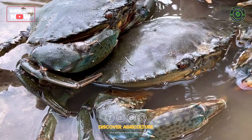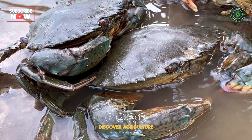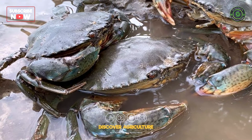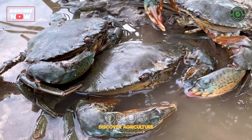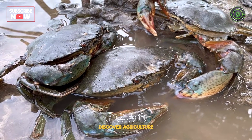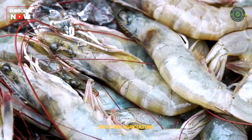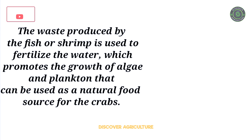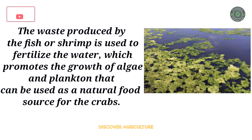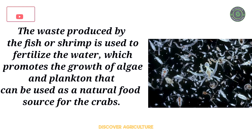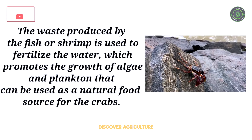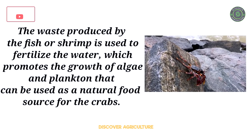Integrated farming: This method involves the cultivation of crabs in conjunction with other aquatic species such as fish or shrimp. The waste produced by the fish or shrimp is used to fertilize the water, which promotes the growth of algae and plankton that can be used as a natural food source for the crabs.